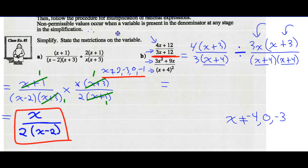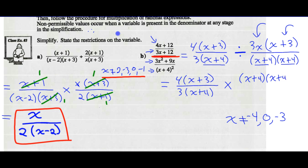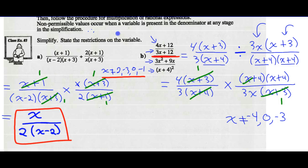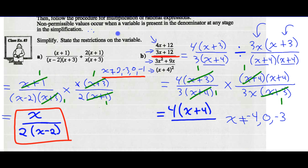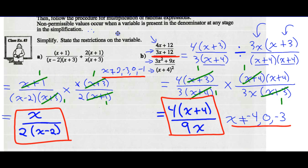Now I change division to multiplication. My first rational expression doesn't change; I change division to multiplication and take the reciprocal of my divisor. I can now reduce any numerator with any denominator. x plus 3 divided by x plus 3 is 1. x plus 4 divided by x plus 4 is 1. There's nothing else common. So my numerator is 4 times 1 times 1 times x plus 4, giving 4 times x plus 4. My denominator is 3 times 1 times 3x times 1, giving 9x. So the simplified rational expression is 4 times x plus 4 over 9x.